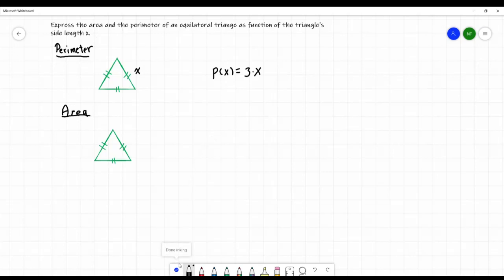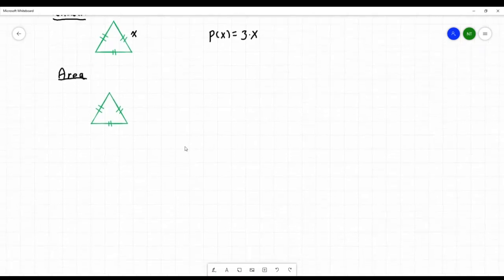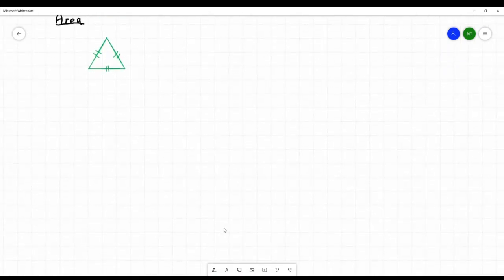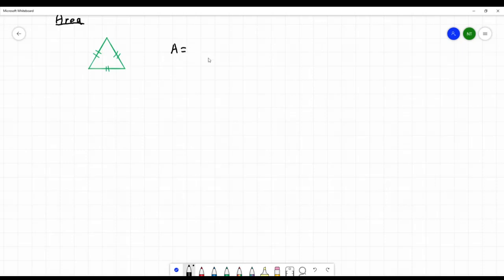So now let's do the same thing for the area of the triangle. So the formula for the area of the triangle is base times height divided by 2. And we know that the side length is x, and we also know that the base length is also x, right? Because it's an equilateral triangle, all the sides are equal.